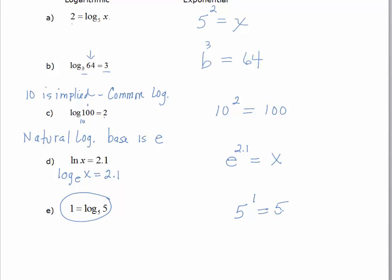5 to the 1 equals 5. And what you'll see soon is that when the base of a log and the argument of the log, and so this is called the argument, again, this number right here, when those are the same, the answer is always going to be 1, and we'll look at that when we look at properties.